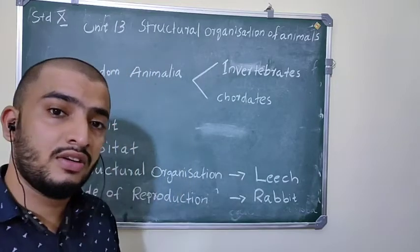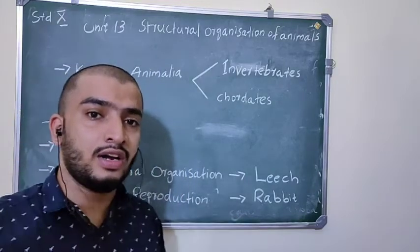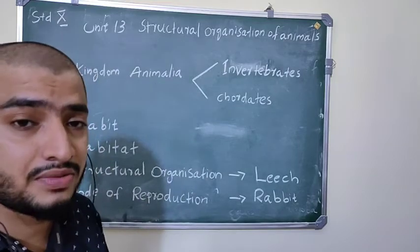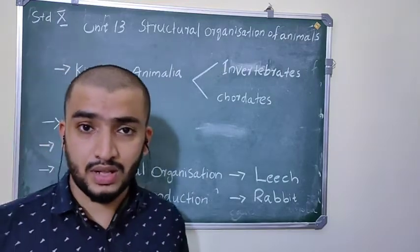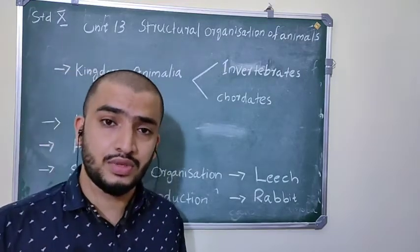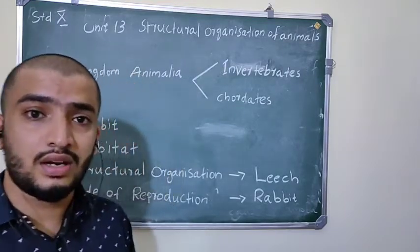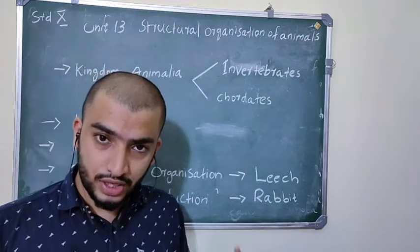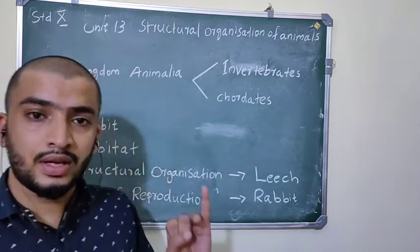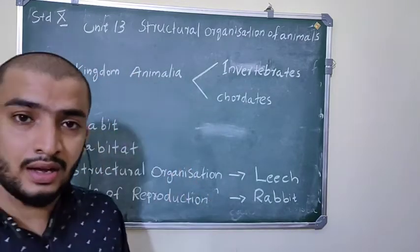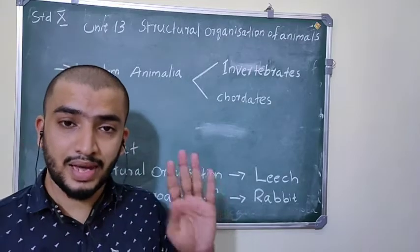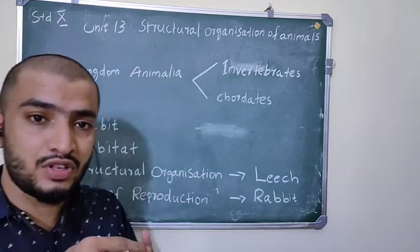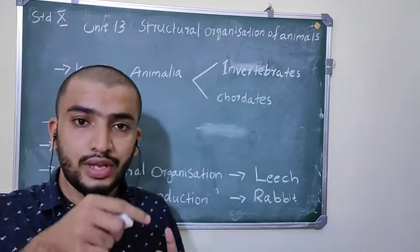You may have heard about the 5 Kingdom classification. Who proposed 5 Kingdom classification? Whittaker. According to Whittaker, there are 5 kingdoms: Kingdom Monera, Kingdom Protista, Kingdom Fungi, Kingdom Animalia, and Kingdom Plantae. Kingdom Animalia includes all the animals.